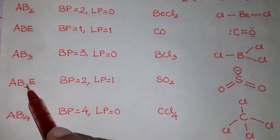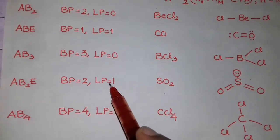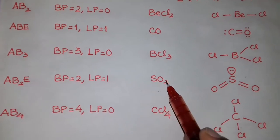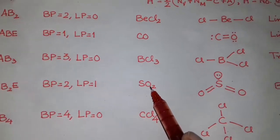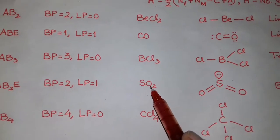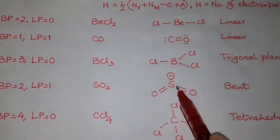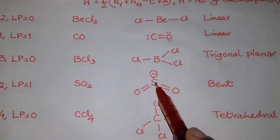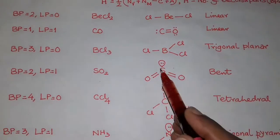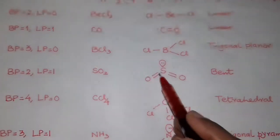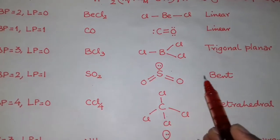Next is AB2E type with H value of 3, bond pair is 2, and lone pair is 1. For SO2: sulfur has 6 valence electrons, oxygen is bivalent, so 6 divided by 2 equals 3 — sulfur has a lone pair. The shape is bent with a lone pair on sulfur, forming two double bonds with oxygen. Shape is bent.